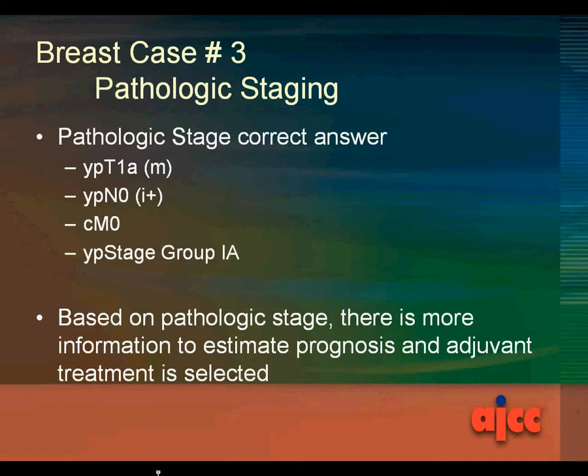The correct answer is YPT1A(m) — where M denotes multiple tumors — YPN0(i+), cM0, and YP stage group 1A. Based on this pathologic stage, there is more information to estimate the prognosis and adjuvant treatment is selected.